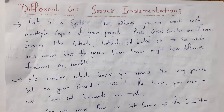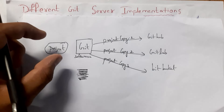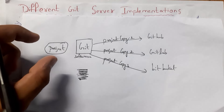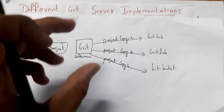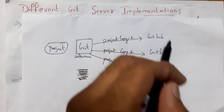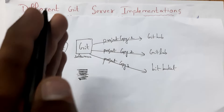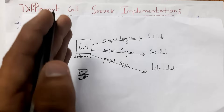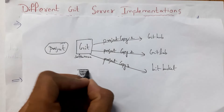First, I will explain different Git server implementations. Whenever you develop any project, we will store our project in Git software. From Git software, we will copy our project into various servers like GitHub, GitLab, and Bitbucket. In order to copy our project into various servers, you need to use the same Git commands.